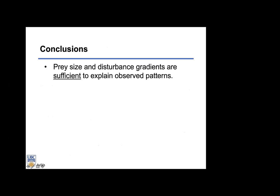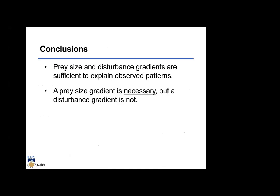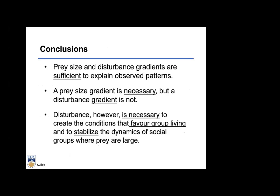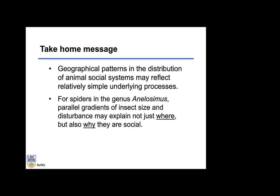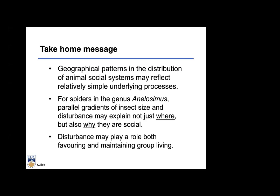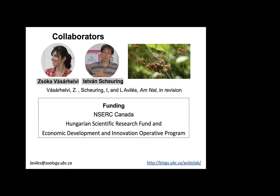In summary: prey size and disturbance gradients are sufficient to explain observed patterns. A prey gradient is necessary, but a disturbance gradient is not; however, some disturbance is necessary to create conditions that favor group living and to stabilize the dynamics of social groups where prey are large. The take-home message is that geographical patterns in the distribution of animal social systems may reflect relatively simple underlying processes — not just in spiders but in many other social organisms. In Anelosimus, parallel gradients of insect size and disturbance explain not just where but why they are social, and disturbance may both favor and maintain group living — a result we found quite unexpected and exciting.